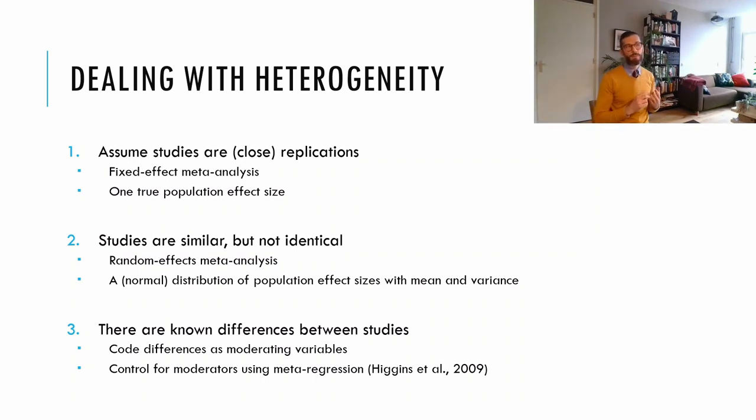But the third case is more interesting, and that is when there are systematic differences between studies that we suspect might cause heterogeneity. You can code those differences between studies as moderator variables and account for their influence using meta-regression. However, when the number of studies is small relative to the number of moderators, we run into what's known as the curse of dimensionality.